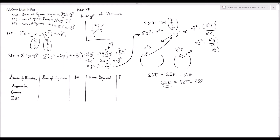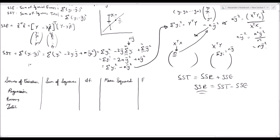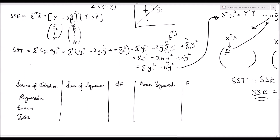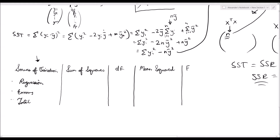Now we come to something very important: the ANOVA table. The first column represents the source of variation. You should order the rows as: first, variation from the regression model (SSR); second, variation due to errors (SSE); and the last row being the total (SST). SST always equals SSR plus SSE.